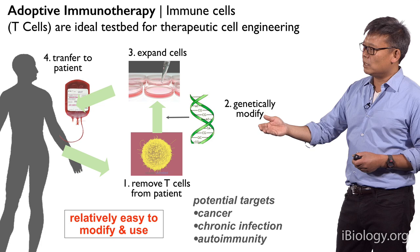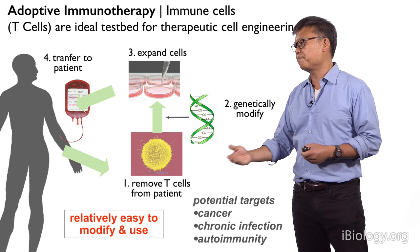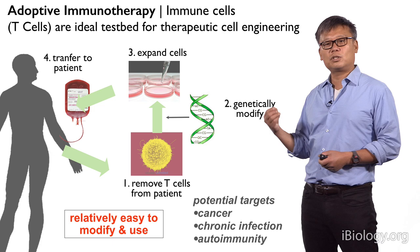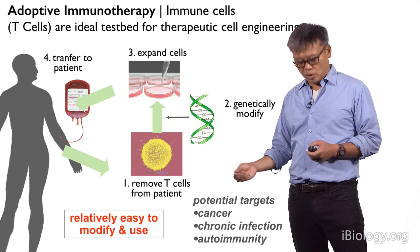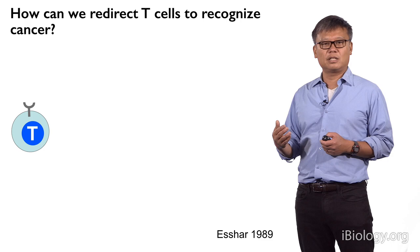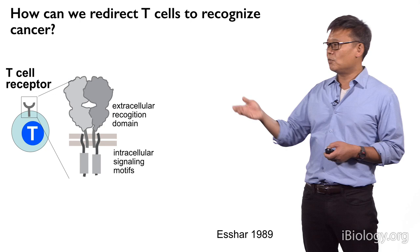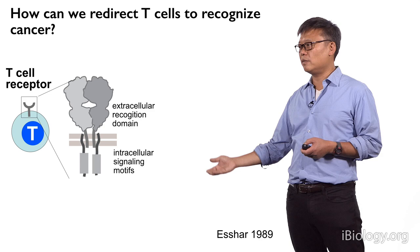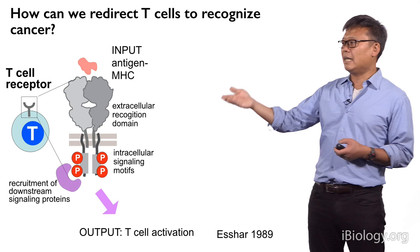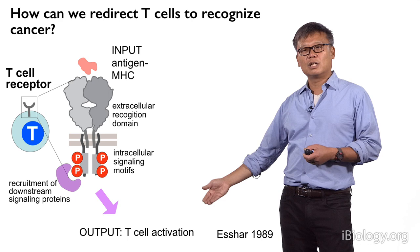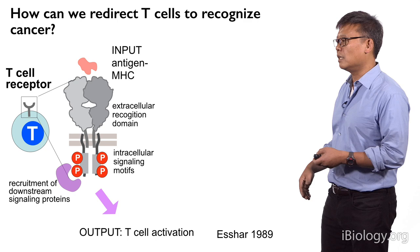T cells can be used for many potential targets — they could be used to recognize cancer, chronic infection, and also to combat autoimmunity. So how could we redirect T cells to recognize cancer? If you look at a native T cell, the key receptor molecule is the T cell receptor, which has an extracellular domain and key intracellular signaling motifs. When the cognate peptide antigen is bound by that extracellular domain, it leads to phosphorylation of these intracellular motifs, which leads to the recruitment of various downstream signaling proteins that then lead to the activation of that T cell and killing of the target cell.